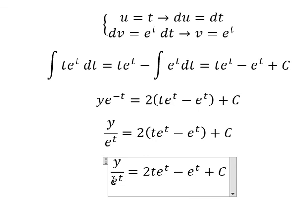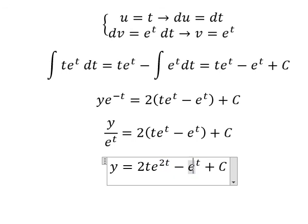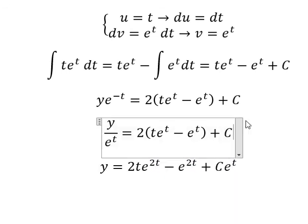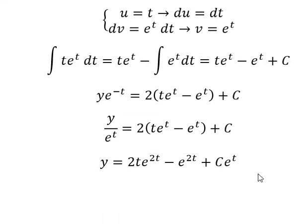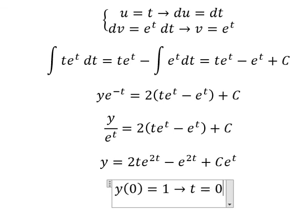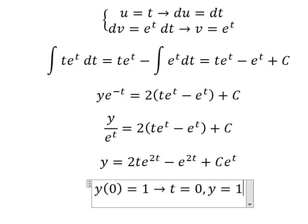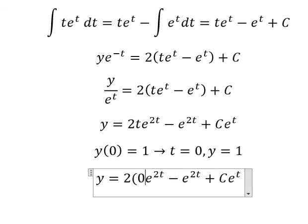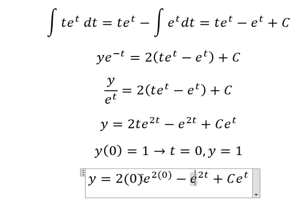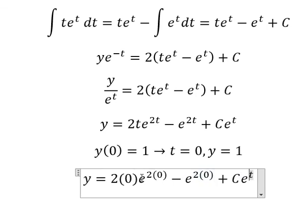We multiply both sides by e to the power of t. Next we apply the initial conditions: when t equals 0, y equals 1. We substitute 0 in for t and 1 in for y to simplify.